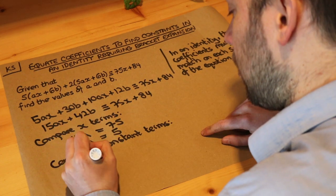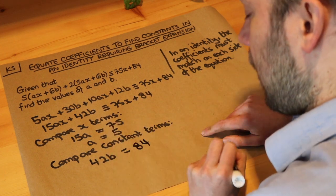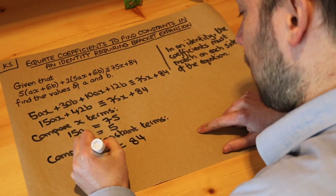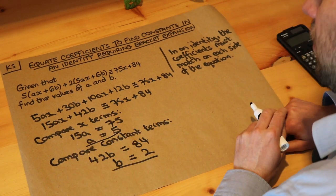On the left-hand side we've got the 42b, and on the right-hand side we've got the 84. And then if we just divide both sides by the 42, 84 divided by 42 is 2, and that gives you your final answer.